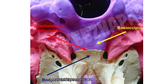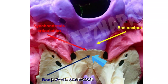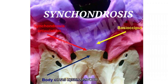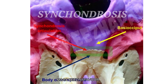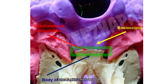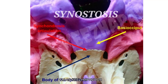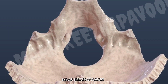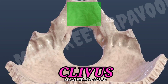The anterior surface articulates with the body of the sphenoid bone, and this joint is a synchondrosis. After the age of 25, ossification takes place and the joint becomes synostosis. The superior surface forms a slope called the clivus.